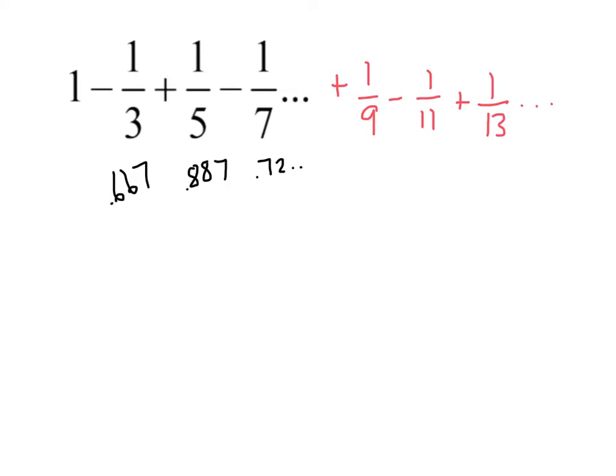And what would begin to happen in this alternating series is you start at 1, and then your next term is 2/3, and your next term is up a little bit. And you essentially just bounce back and forth,